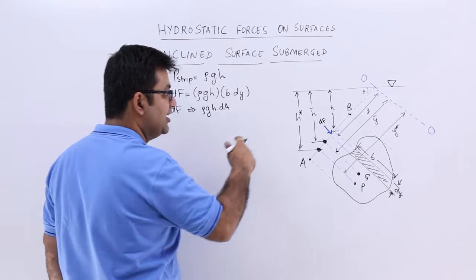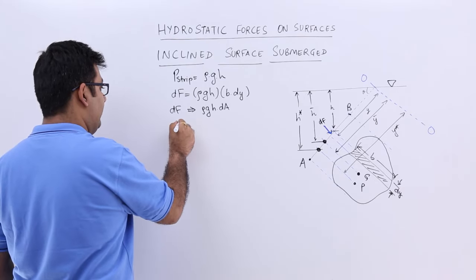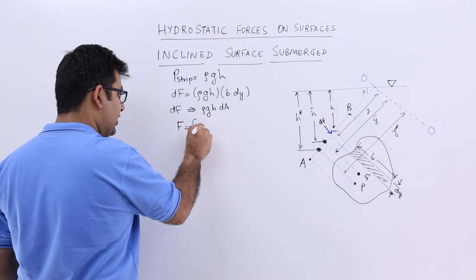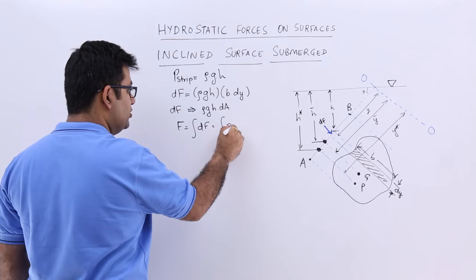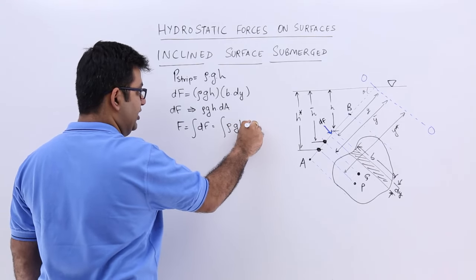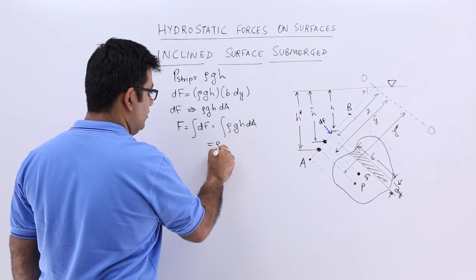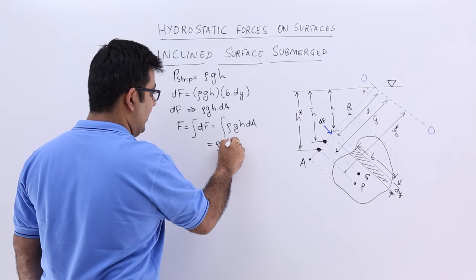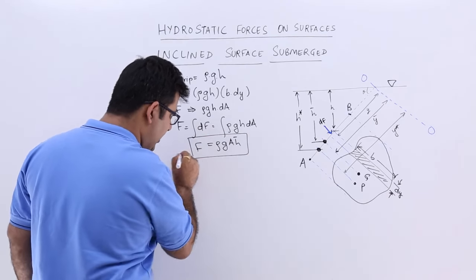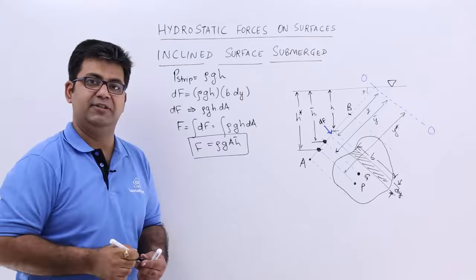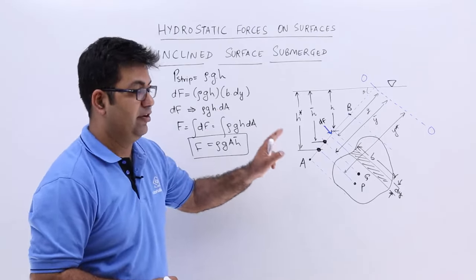For the entire surface we integrate: F = integral of rho·g·h·dA, and rho·g can come out, giving rho·g·A·h-bar. So the value of the total pressure force is the same as that for a vertical surface.